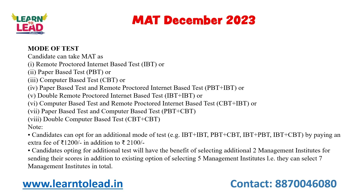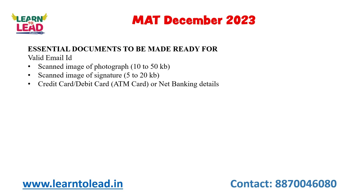If you want to write any one mode — IBT, CBT, or PBT — the fee is ₹2,100. They also provide an additional opportunity: you can take two IBTs, one PBT and one CBT, one IBT plus PBT, or one IBT plus CBT. If you plan to write two sessions, you need to pay an extra ₹1,200, making the total around ₹3,300. You can use the best of the two scores to apply for colleges. Required documents include a scanned photograph, scanned signature, and a credit card, debit card, or net banking details.